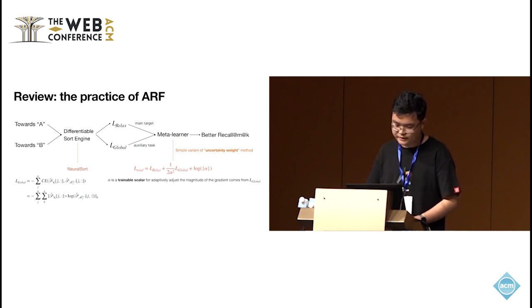For the Oracle condition, we employ a straightforward cross entropy loss named L-Global to optimize the consistency of ground truth and predicted permutation matrices. As a practice of the ARF, we have employed NeuralSort as the differentiable sorting operator and employed the uncertainty weight method as the meta learner. Uncertainty weight method will adaptively adjust the combination coefficient of the sub-targets according to the difficulty of learning targets.